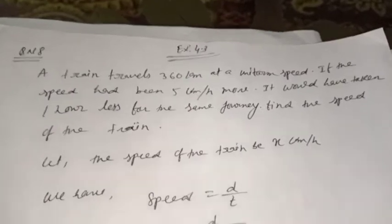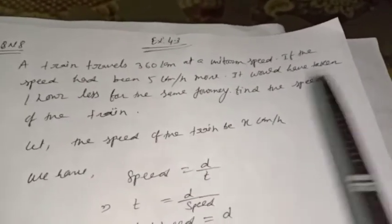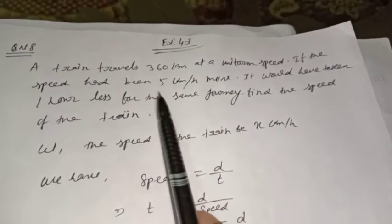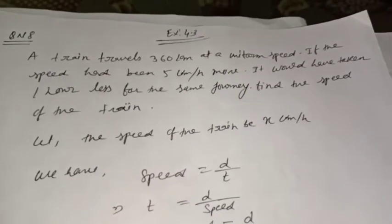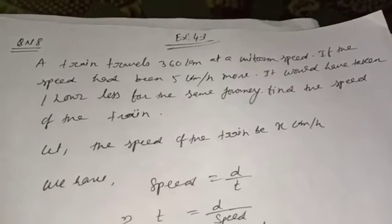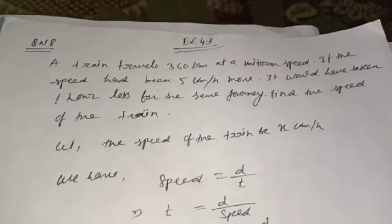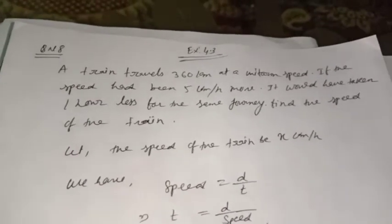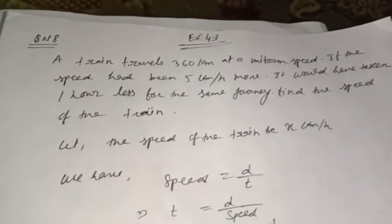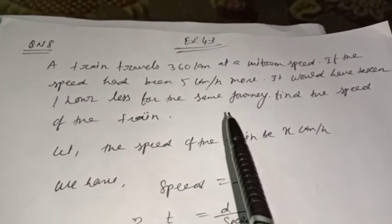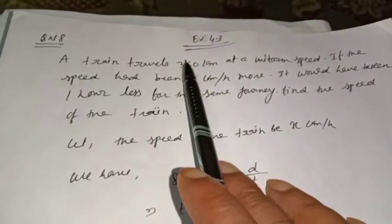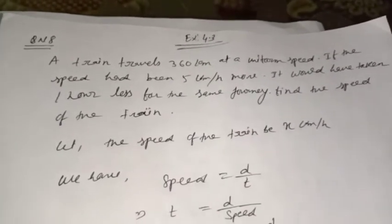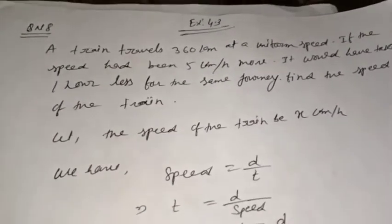A train travels 360 kilometers at a uniform speed. If the speed had been 5 kilometers per hour more, it would have taken one hour less for the same journey. To understand: the train is traveling 360 kilometers at uniform speed. If the speed had been 5 km/hr more, it would have taken one hour less for the same journey.